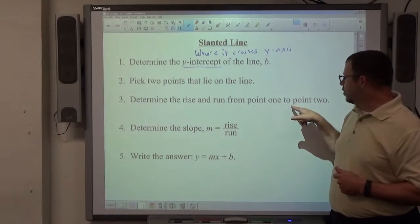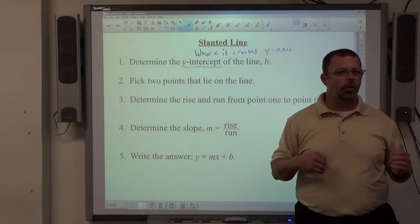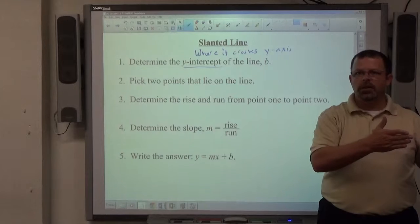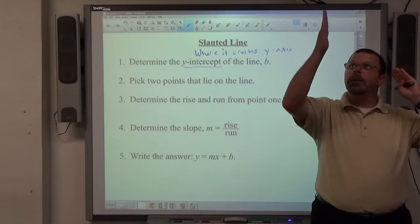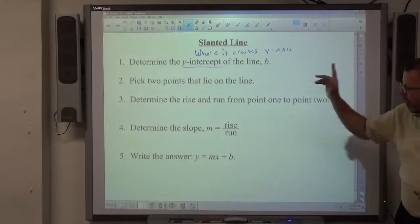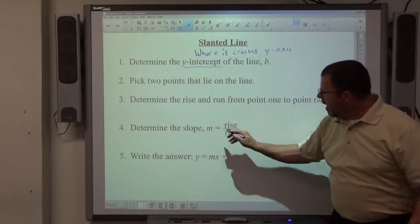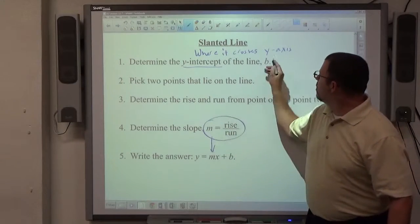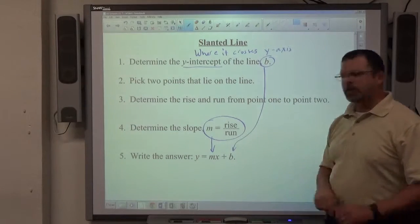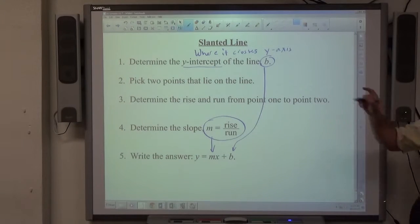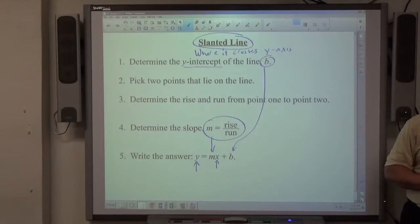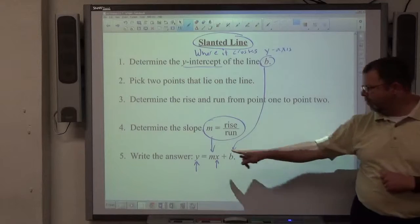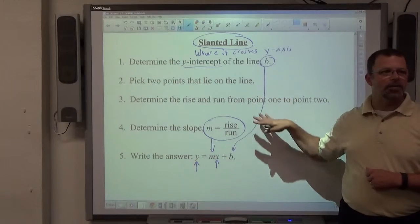Determine the rise and run from point one to point two. Either one could be point one, either one could be point two. It doesn't matter. I like to go from left to right. So if I had two points, this would be point one, this would be point two. I go up and down, then left to right. Slope is rise over run. That's m. m equals a number that goes there. b equals a number that goes there. Your equation is always y equals mx plus b. If it's slanted, there will be a y and an x in your answer. If you leave the y or the x off, you're now looking at a horizontal or vertical line. Both letters must be there. So your job is to find numerical value of m, numerical value of b. That's the whole process.